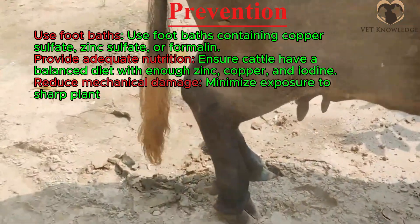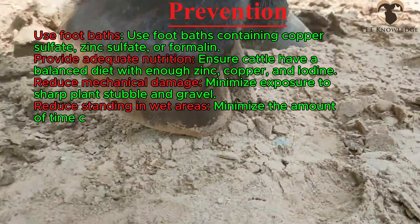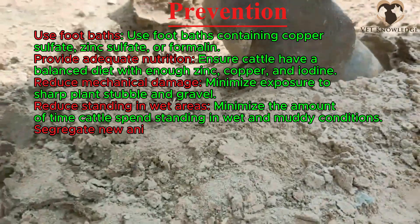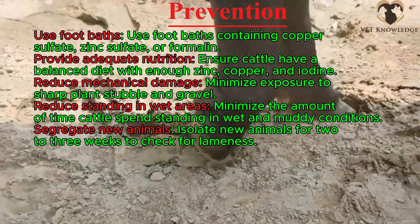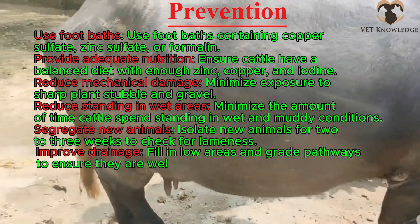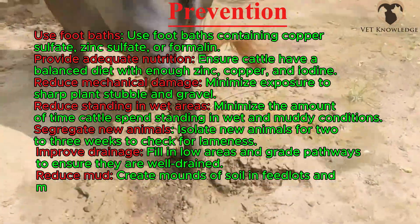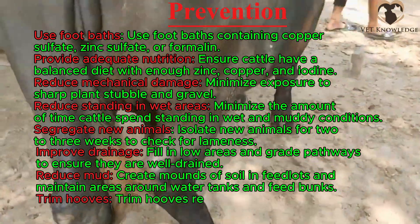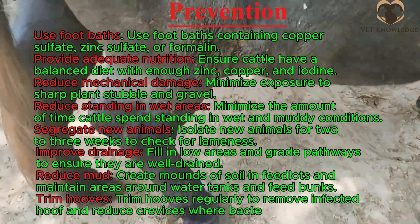Reduce mechanical damage by minimizing exposure to sharp plant stubble and gravel. Reduce time cattle spend standing in wet and muddy conditions. Segregate new animals and isolate them for 2 to 3 weeks to check for lameness. Improve drainage by filling low areas and grading pathways to ensure they are well drained. Reduce mud by creating mounds of soil in feedlots and maintaining areas around water tanks and feed bunks. Trim hooves regularly to remove infected hoof tissue and reduce crevices where bacteria can live.